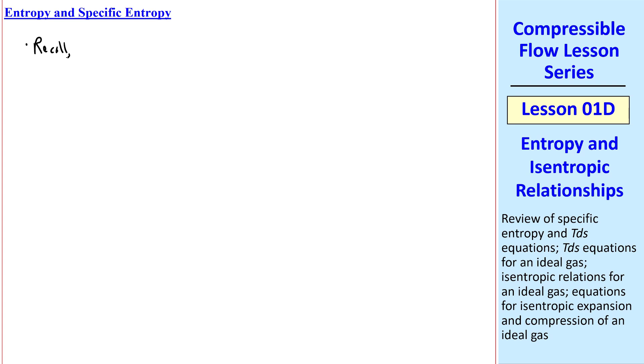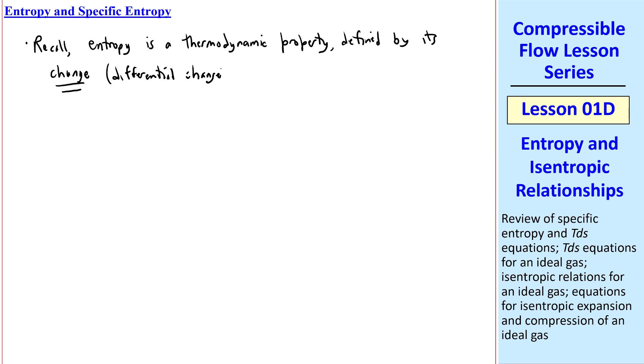You should recall from thermodynamics that entropy is a thermodynamic property defined by its change, or differential change actually, in a process. Consider a closed system with some heat coming in, delta Q, and inside this system are properties entropy, temperature, pressure, etc.